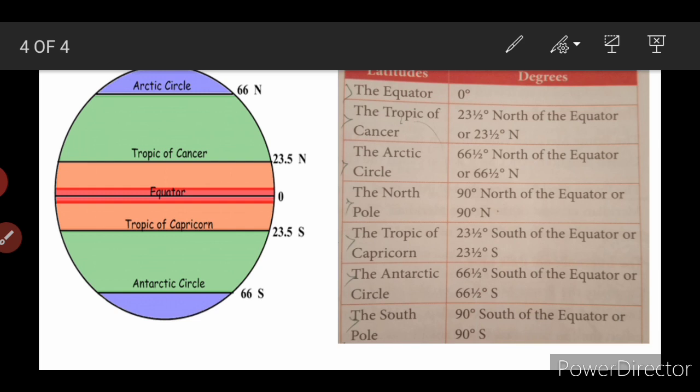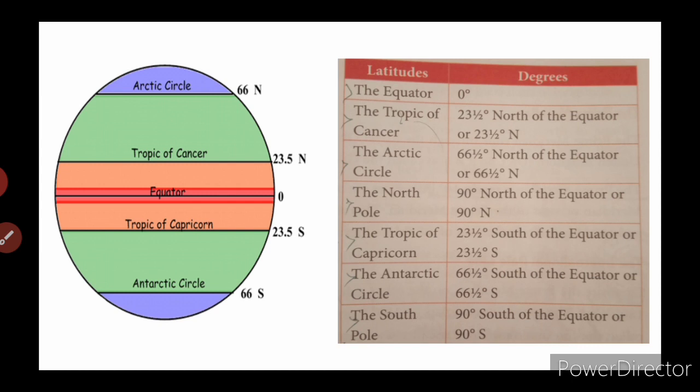In this next figure, they have given us the latitudes and the degrees — how they are measured. In the figure you can understand better, and whatever they want to say, they have given in a chart. On one side we can see the latitude and the degrees. Here at the equator, they have given 0 degrees. The Tropic of Cancer is 23 and a half degrees north of the equator.